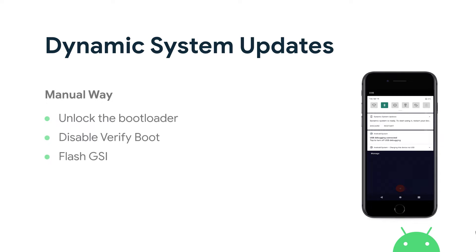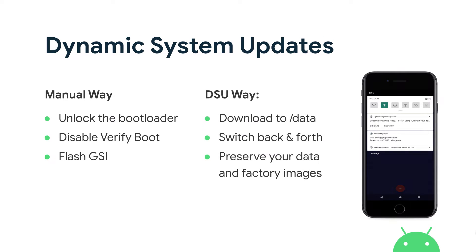Now, the problem with GSIs is that in order to test them, you have to unlock your device. Not all devices are unlockable. You have to disable verified boot and reflash the system image from your manufacturer with this GSI, thereby destroying it. What we created in Android 10 is called Dynamic System Updates, and they allow you to download that GSI in a dual boot-like setup that does not tamper with your factory ROM. You can download GSIs, boot into them, reboot into them, download several of them, and delete them without touching your device's data or factory images.